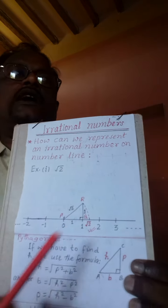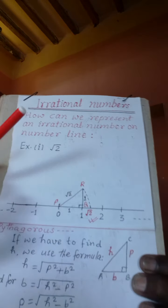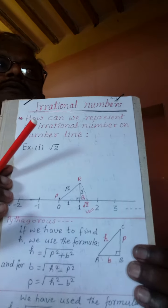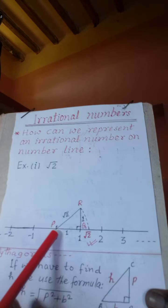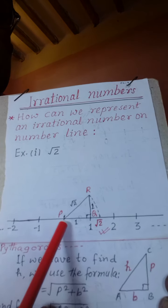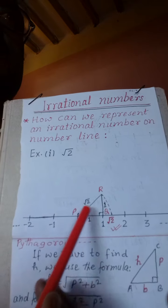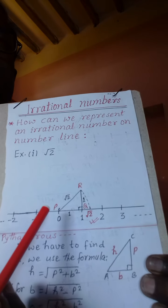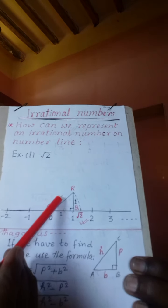Step 3: Now we will find PR. You can see on the screen — PR. We use the Pythagoras theorem, and the result is root 2.